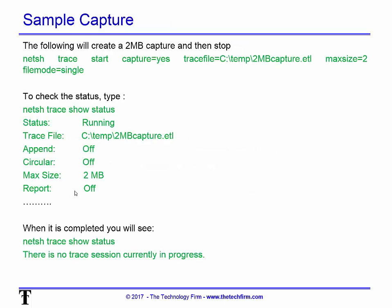Let's do a simple example. The command is: 'netsh trace start capture=yes' with a trace file location — try to avoid spaces in the path or use double quotes. Set max size to 2 (that's 2 MB) and file mode to single for a single file. When you hit enter, the command prompt comes right back and looks like nothing happened, but it is capturing in the background.